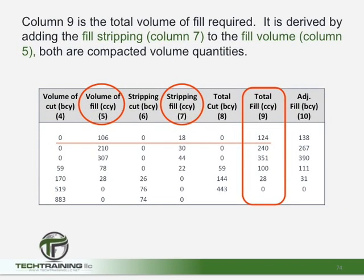Column 9 is the total volume of fill required between two adjacent stations — these are compacted cubic yards. Looking at the first item, 124 compacted cubic yards are required. This number comes from totaling column 5 and column 7: column 5 is the volume of fill required, while column 7 is the amount of stripped material required between the two adjacent stations. So 106 plus 18 gives us 124 compacted cubic yards of material required between the two stations.